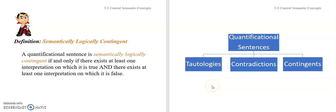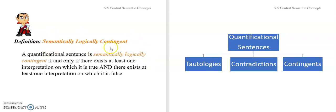All right, logic fans, welcome back to our second video on section 5.5. This is video 5.5b. We're going over our central semantic concepts. We covered tautologies and contradictions. We're now going to look at semantic logical contingents.